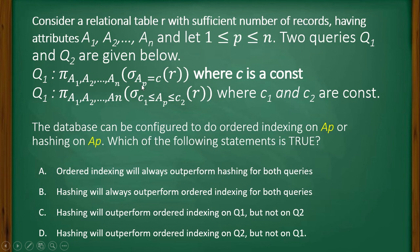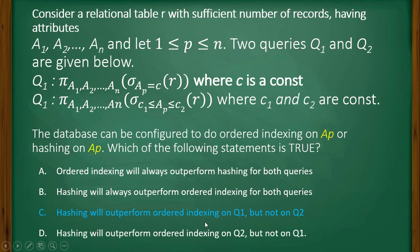So option C is correct: hashing will outperform ordered indexing on query one but not on query two. The answer is option C.